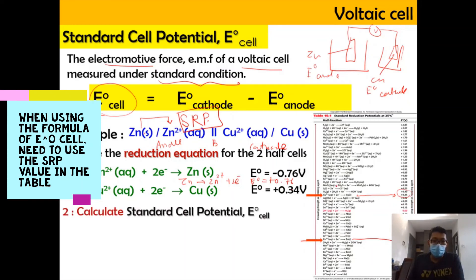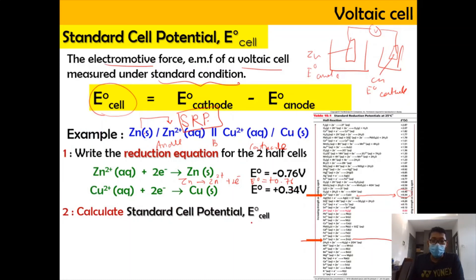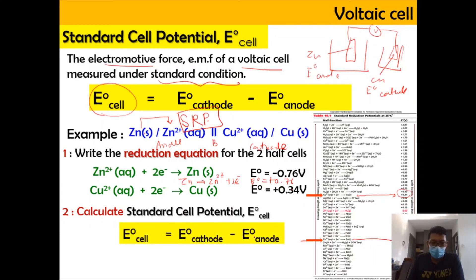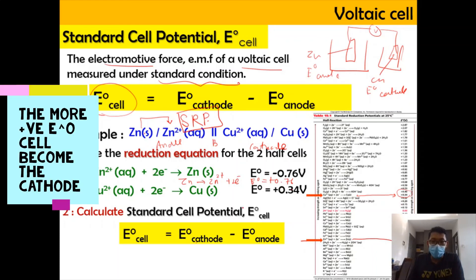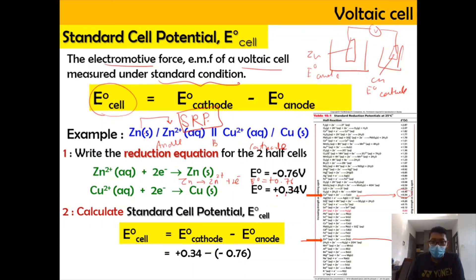So, E⁰cell = E⁰cathode − E⁰anode = (+0.34) − (−0.76) = +1.10 V. Both values are used in their reduction state, since the formula requires SRP values. The result gives us the standard cell potential for the Zn/Cu galvanic cell.